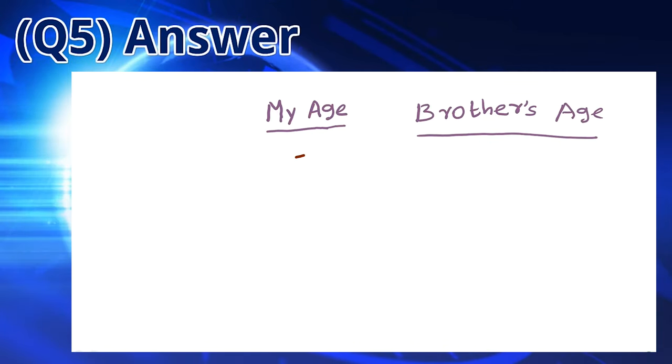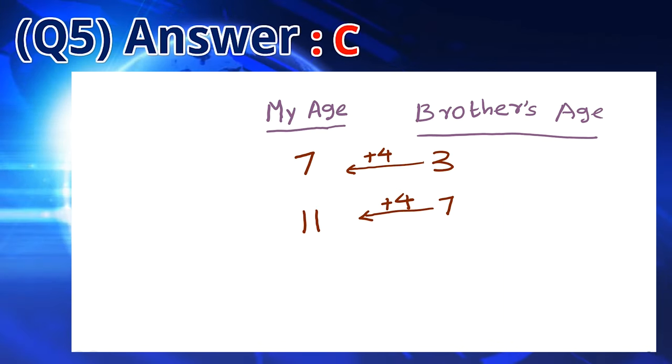When my brother's age was 3, my age is 7. There is an age difference of 4 years. When my brother is 7, the age difference would still be 4. So 7 plus 4 is 11. This means that the answer is C.